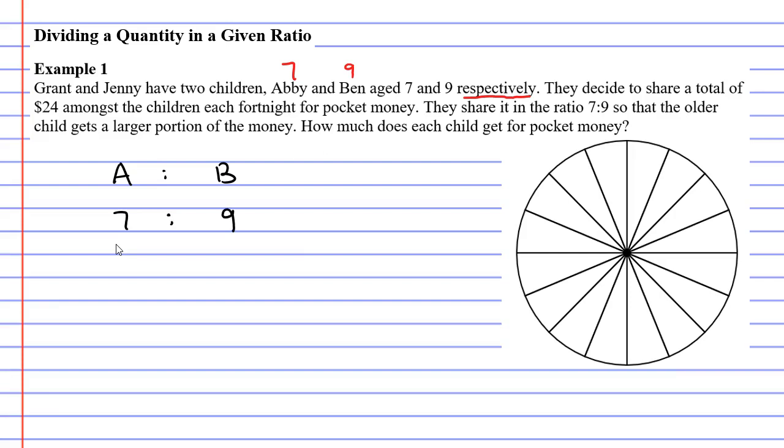A way to look at this is to think: Abby is getting seven parts of the money and Ben is getting nine parts. So he's getting a bigger portion. If Abby is getting seven parts and Ben is getting nine parts, then altogether there must be 16 parts of the money.